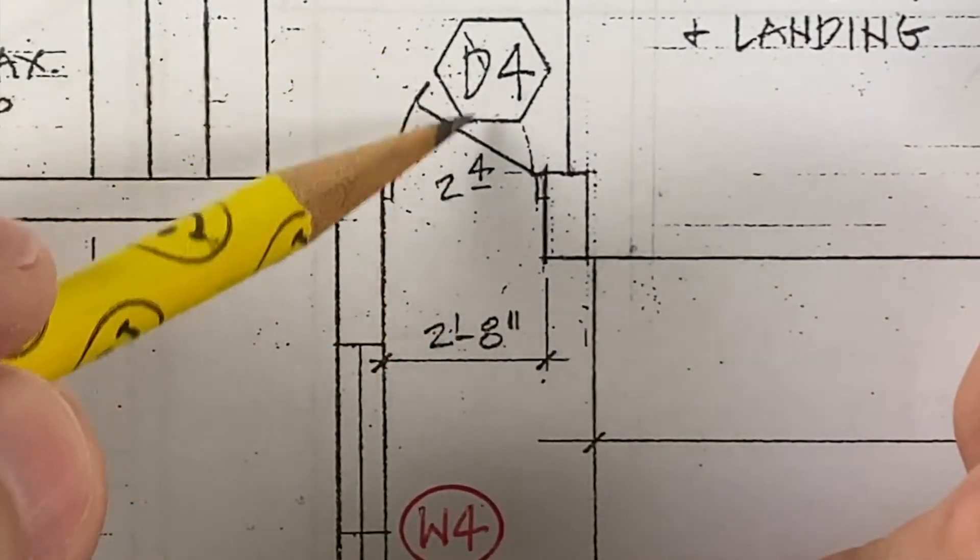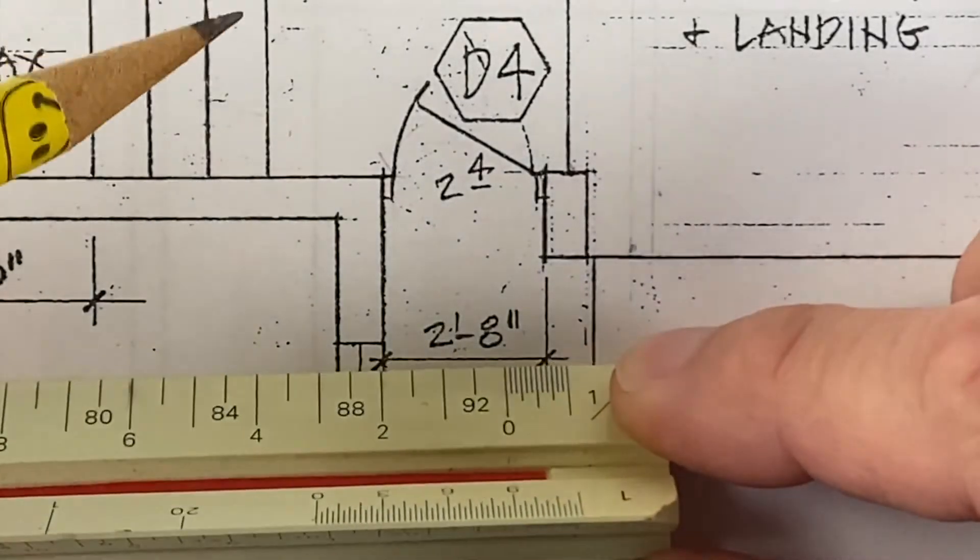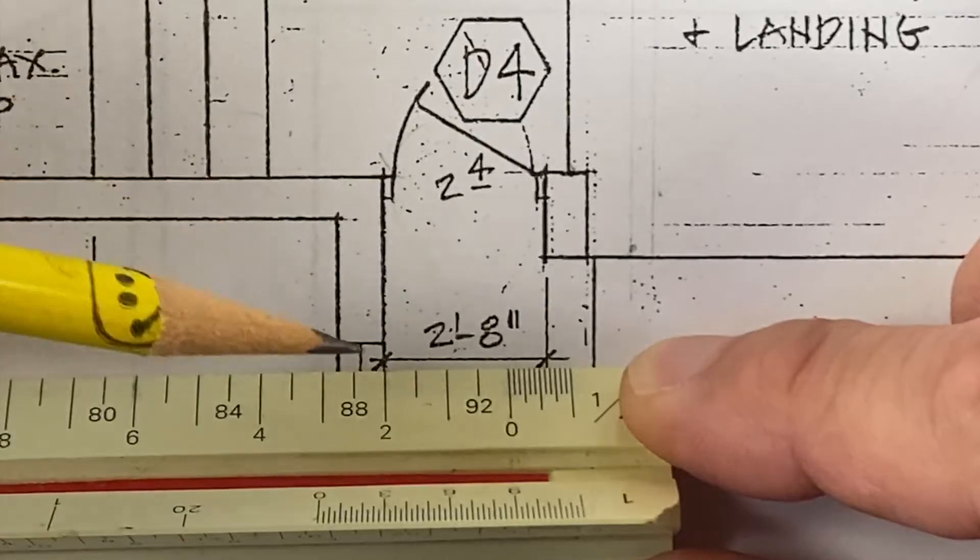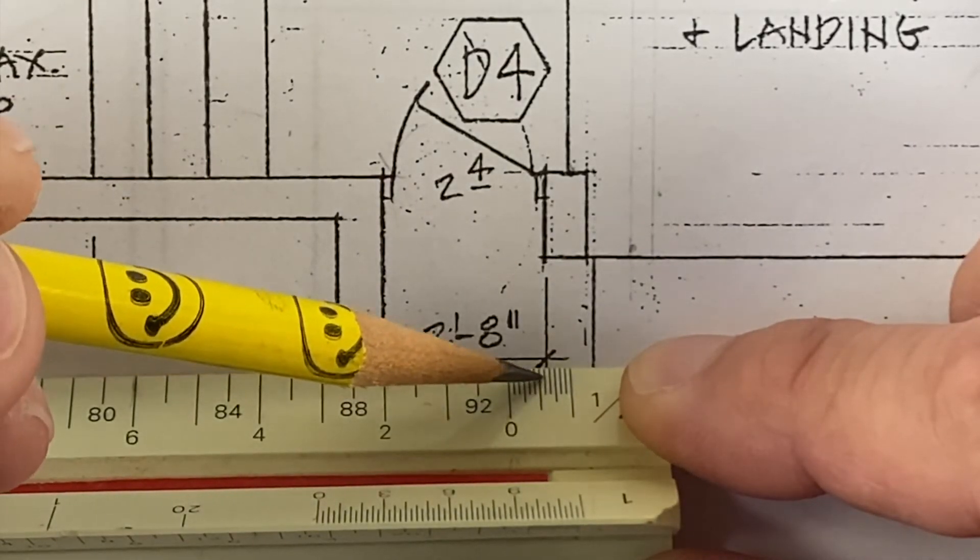And here's a two foot four door and two foot eight inch opening. Line up our scale. One foot, two feet, and six, seven, eight inches.